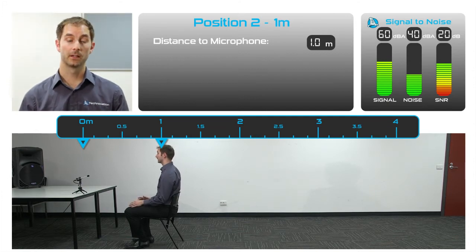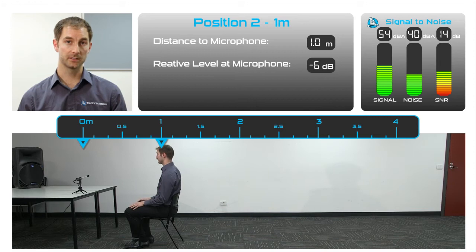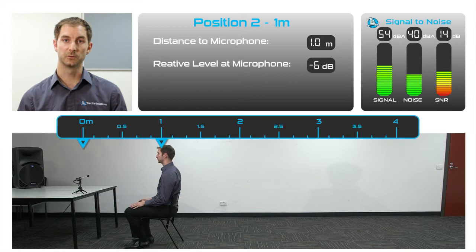If I move away from the microphone, the level of my voice drops by approximately 6 dB for every doubling of distance. This is known as the inverse square law and is a common property of many physical phenomena.